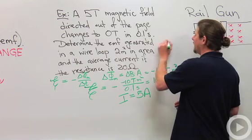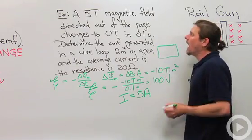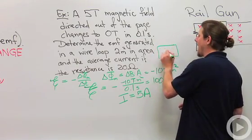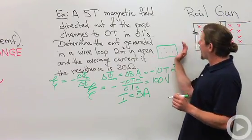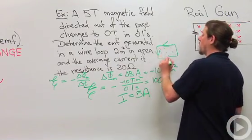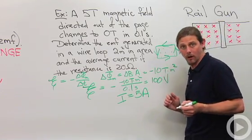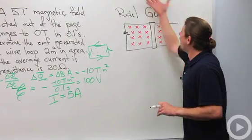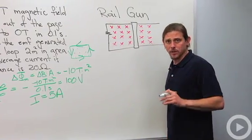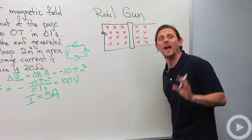Now, what direction will that current be in? Well, if this is my wire, and I've got magnetic field coming out of the board, but it's going down, then I want to bring back the flux, so this is going to be a counterclockwise current. Now, another wonderful example of the use of the Faraday-Lenz law is in the construction of something called a rail gun.